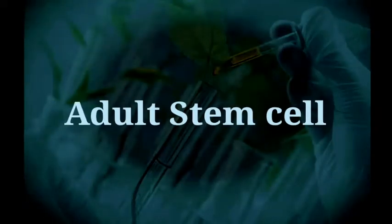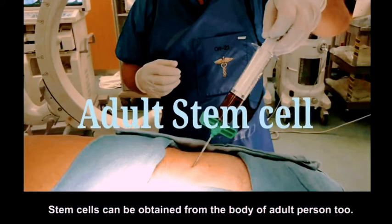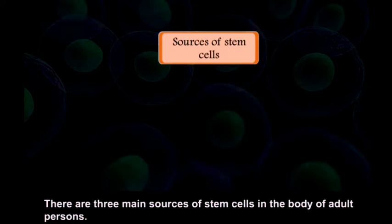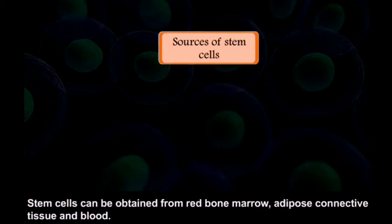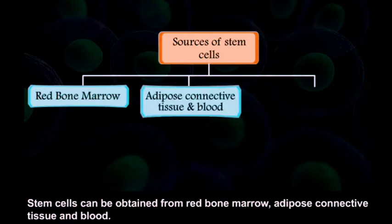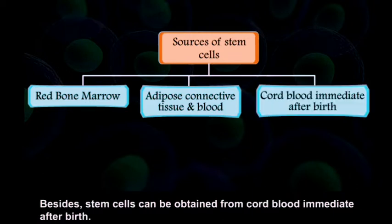Stem cells can also be obtained from the body of an adult person. There are three main sources of stem cells in the adult body: red bone marrow, adipose connective tissue, and blood. Besides these, stem cells can also be obtained from cord blood collected after birth.